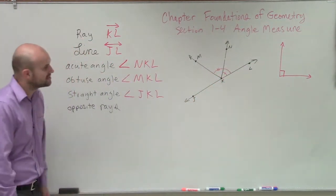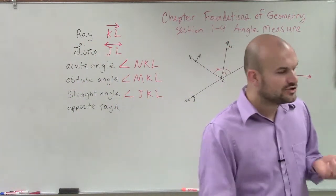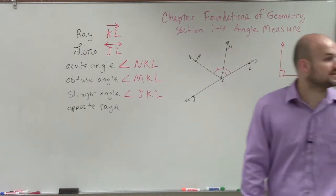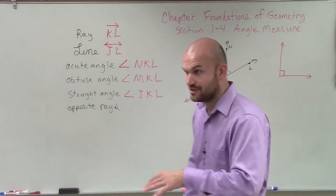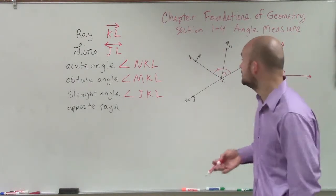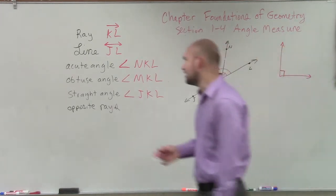And then finally, our opposite rays is, remember, opposite rays are two rays that are collinear. An angle are opposite rays that are non-collinear. That means they lie on the same line. Non-collinear means they don't lie on the same line. So our opposite rays are going to have to be K, J, and K, L are our opposite rays.